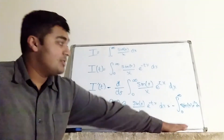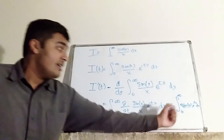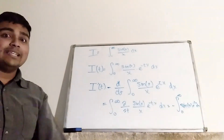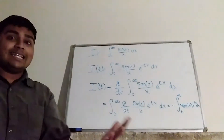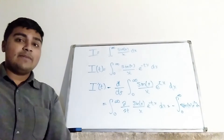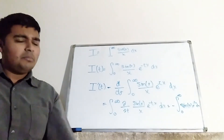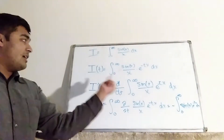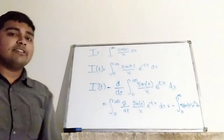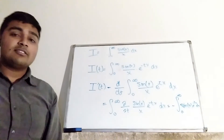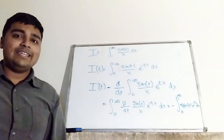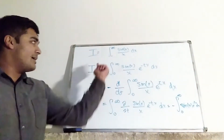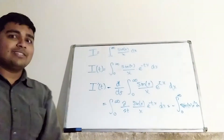Now I'll compute this integral and thus know what I'(t) is. Then I can integrate up to give me I(t) plus some constant. Remember, I want to know I(0), so I'll plug in t equals 0 to evaluate the original integral.